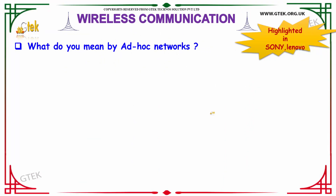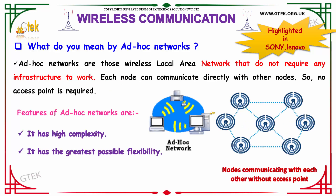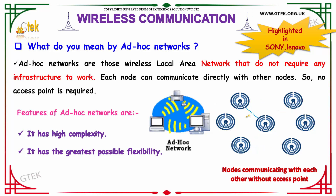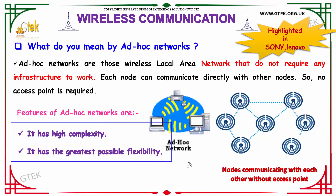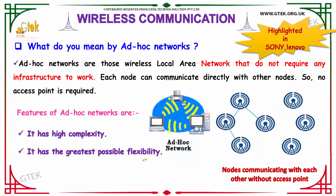What do you mean by Ad Hoc Networks? Ad Hoc Networks are Wireless Local Area Networks that do not require any infrastructure to work. They can directly communicate with other nodes, so no access point in particular is required. Features of Ad Hoc Networks include high complexity and the greatest possible flexibility. Since it does not have an infrastructure, it is highly flexible and uses high complex algorithms in order to communicate.